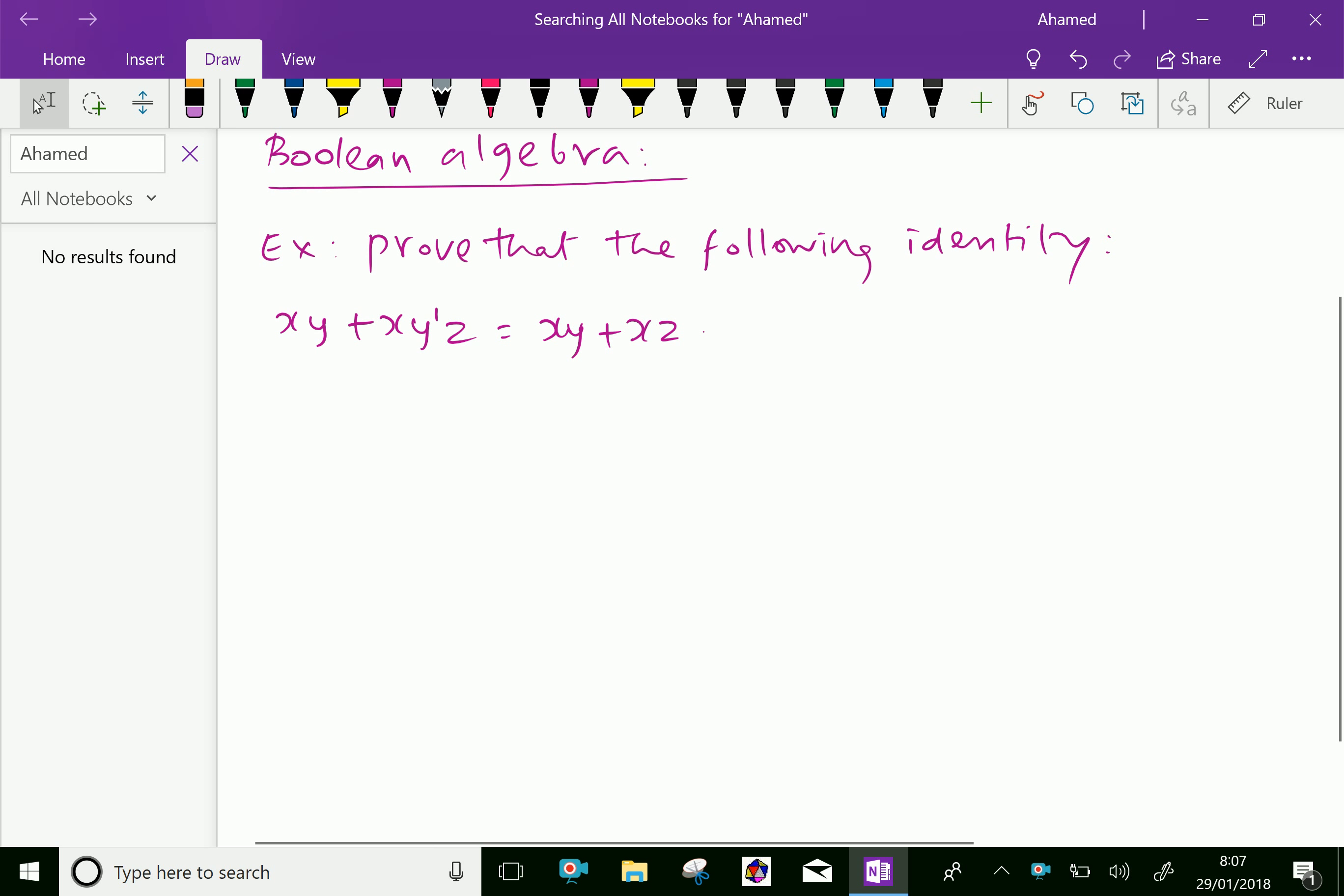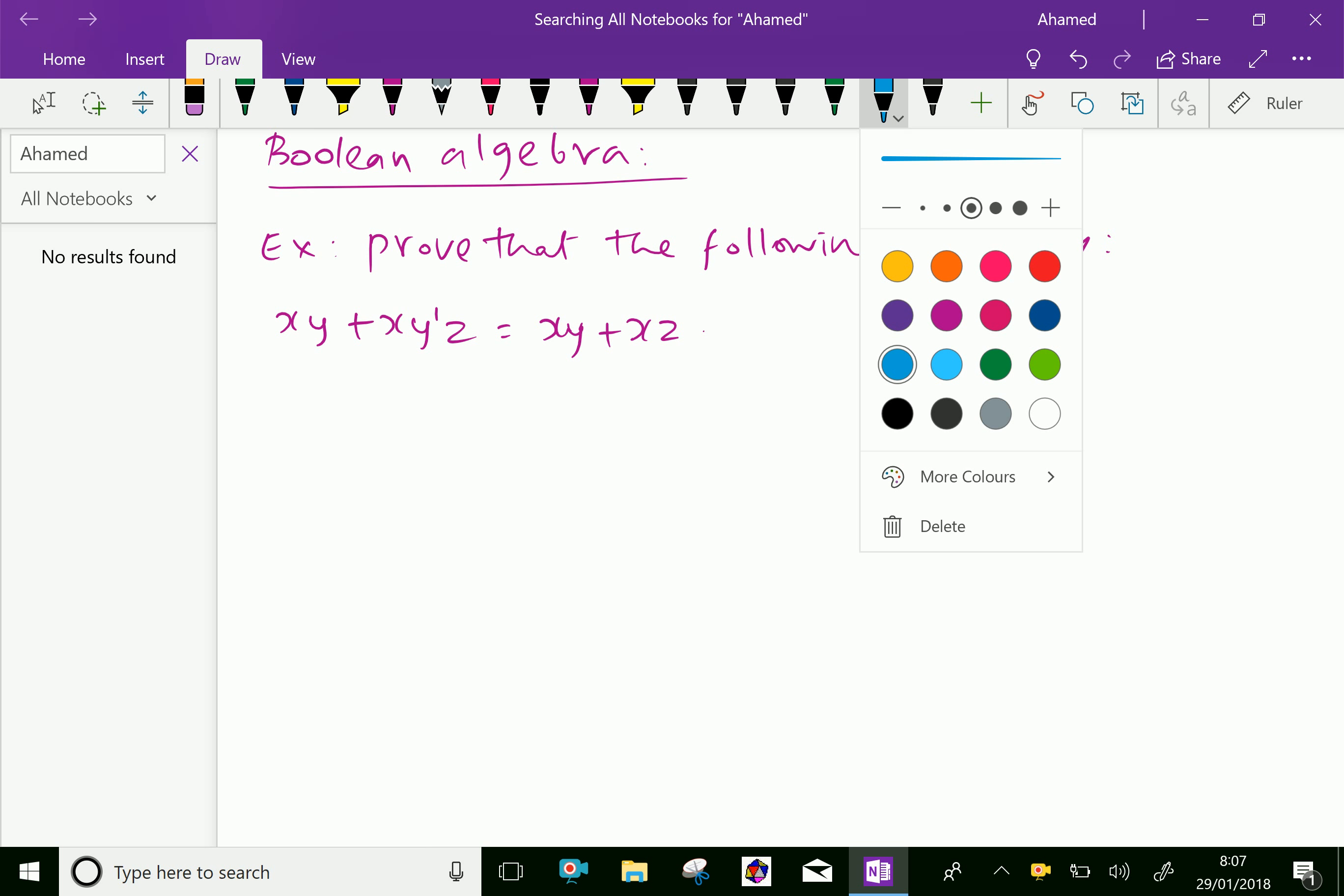Example: Here prove that the following identity xy + xy'z = xy + xz.